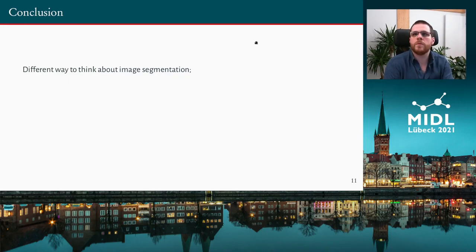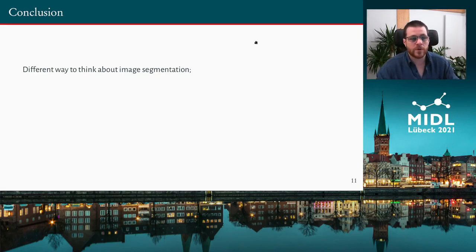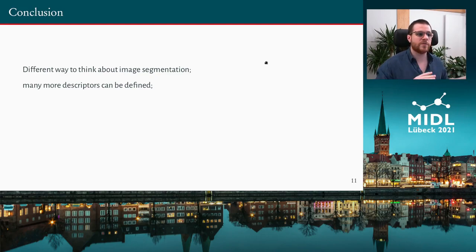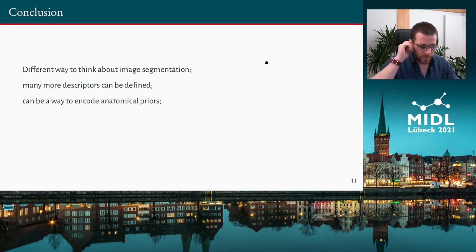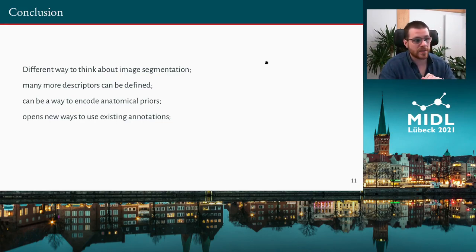To conclude, what we introduce here is not a better way to do image segmentation — pixel-wise losses work really well. Rather, what we show is a different way to think about image segmentation: trying to describe where the object should be and how it should look, rather than micromanaging each pixel of a neural network. There are still many more descriptors that can be defined; we just scratched the surface with a few basic ones. The combination of different tools can allow us to define really powerful descriptors, encoding anatomical prior knowledge beforehand. This could be a way to deal with the lack of annotation — if we can enforce anatomical truth directly during training, it might require less manual annotation.